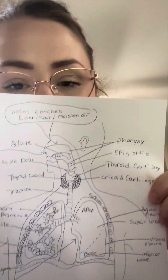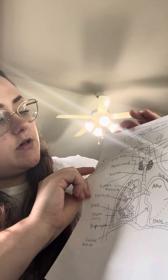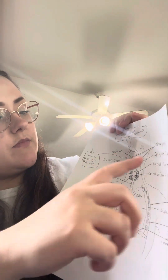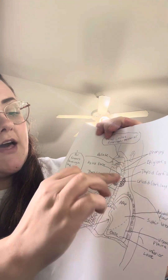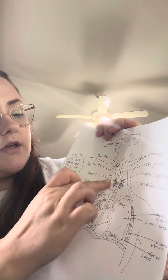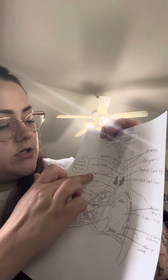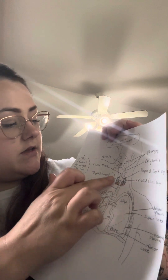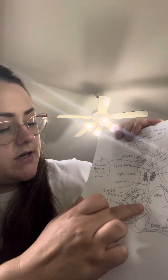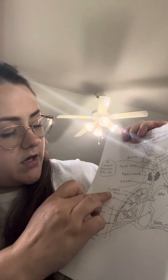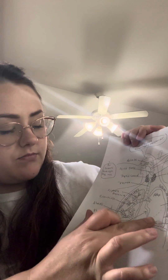So this is the image that I drew. That is the palate, the pharynx, the epiglottis, the thyroid, the cricoid cartilage, the thyroid glands again, the hyoid bone, the trachea, the primary bronchi, the apex, and the base.